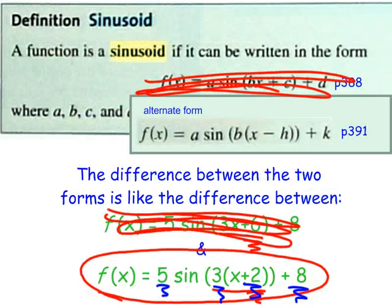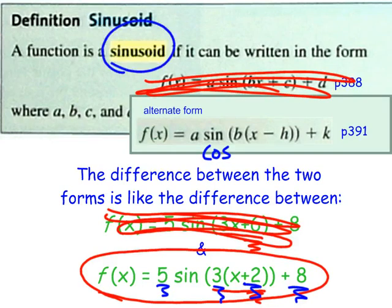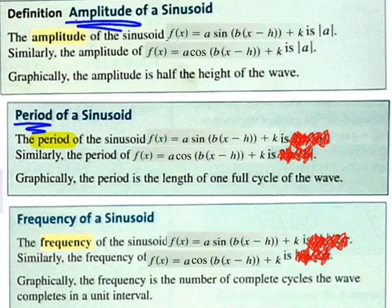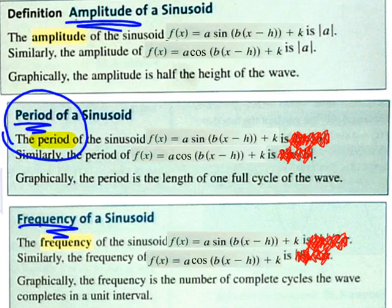One last quick thing: if the function were a cosine, is that still considered a sinusoid? Yes — I'll explain why in class and encourage you to think about it beforehand. At this point in the book there's new terminology — amplitude, period, and frequency. Don't be afraid of it; the only one I'll really use in this video is period, which I've been using casually without officially defining it.